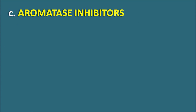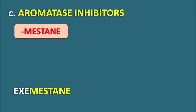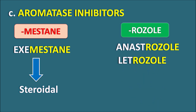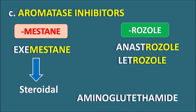The third category is aromatase inhibitors. Drugs with the suffix -mistane include exemestane, which is a steroidal aromatase inhibitor, but steroidal drugs produce more side effects. Non-steroidal aromatase inhibitors were later developed, indicated by the suffix -rozole: anastrozole and letrozole. Aminoglutethimide is another non-steroidal aromatase inhibitor without that suffix. Aromatase inhibitors block estrogen synthesis from androstenedione and are more important in postmenopausal women, so they are used in the treatment of postmenopausal breast cancer.